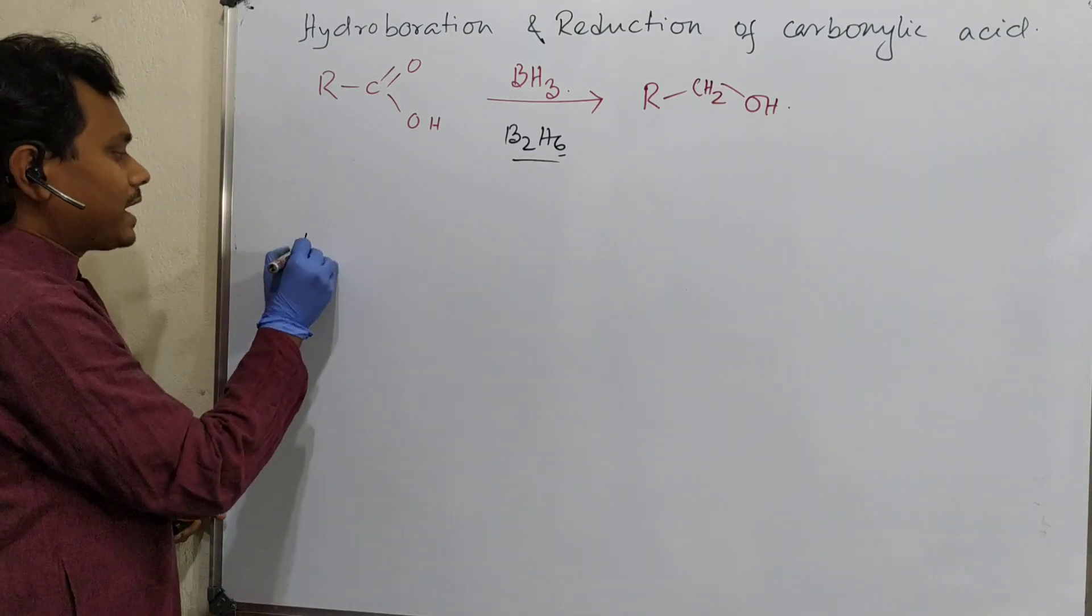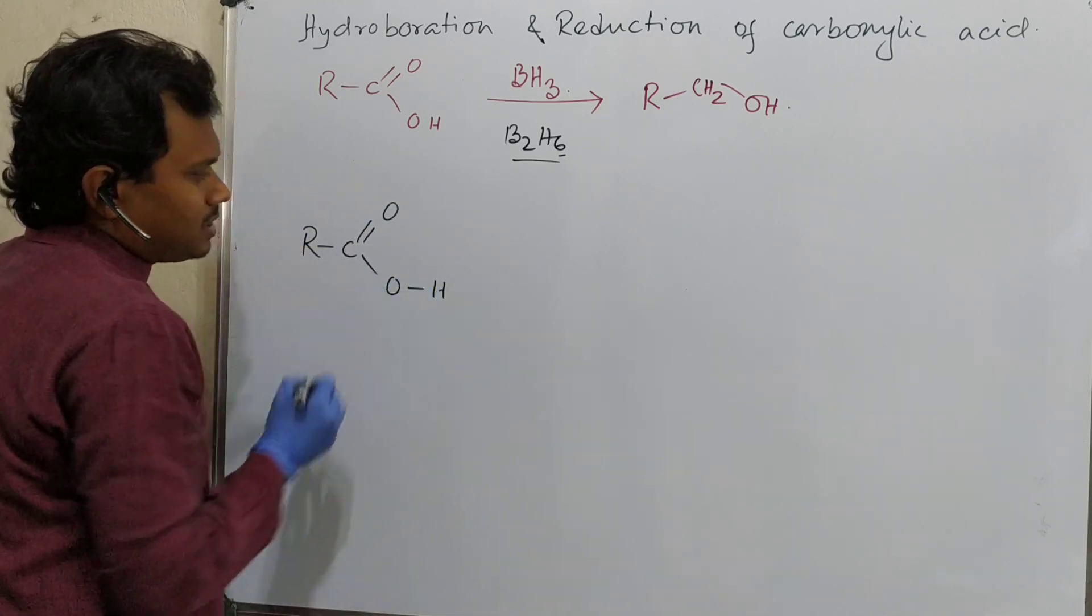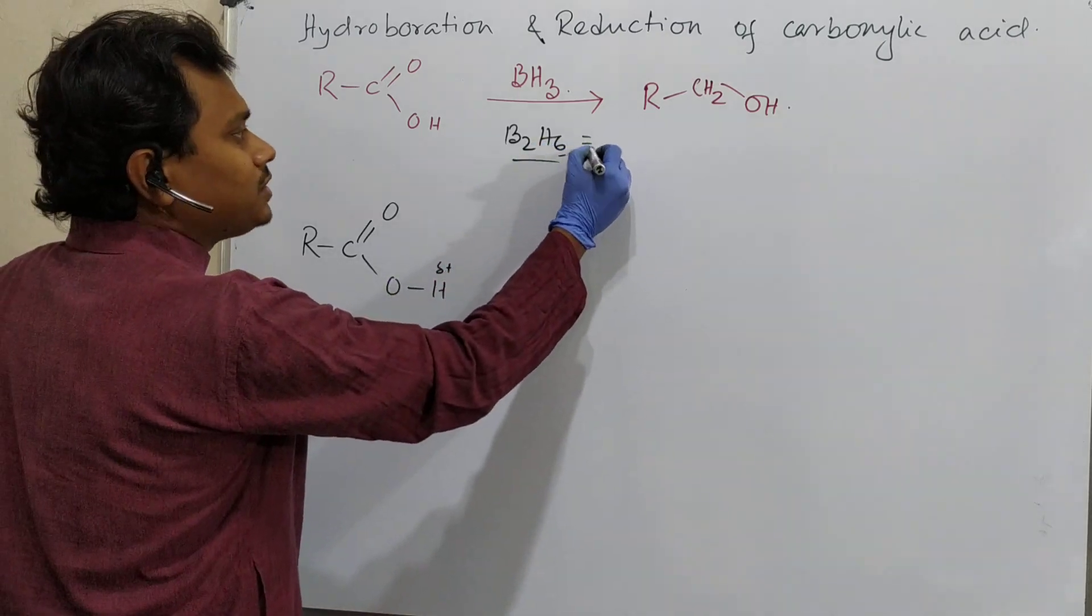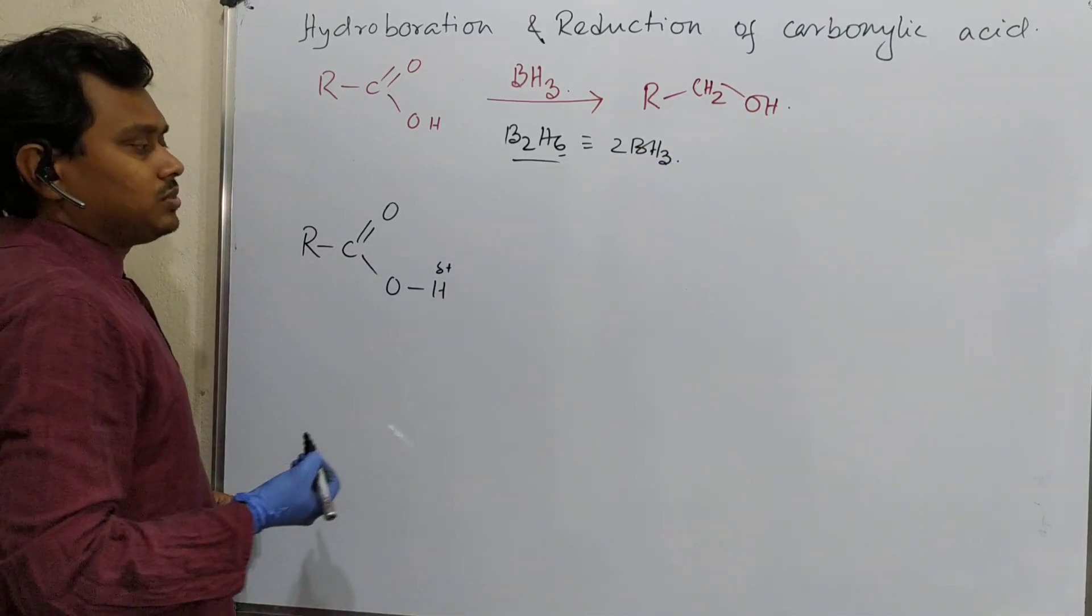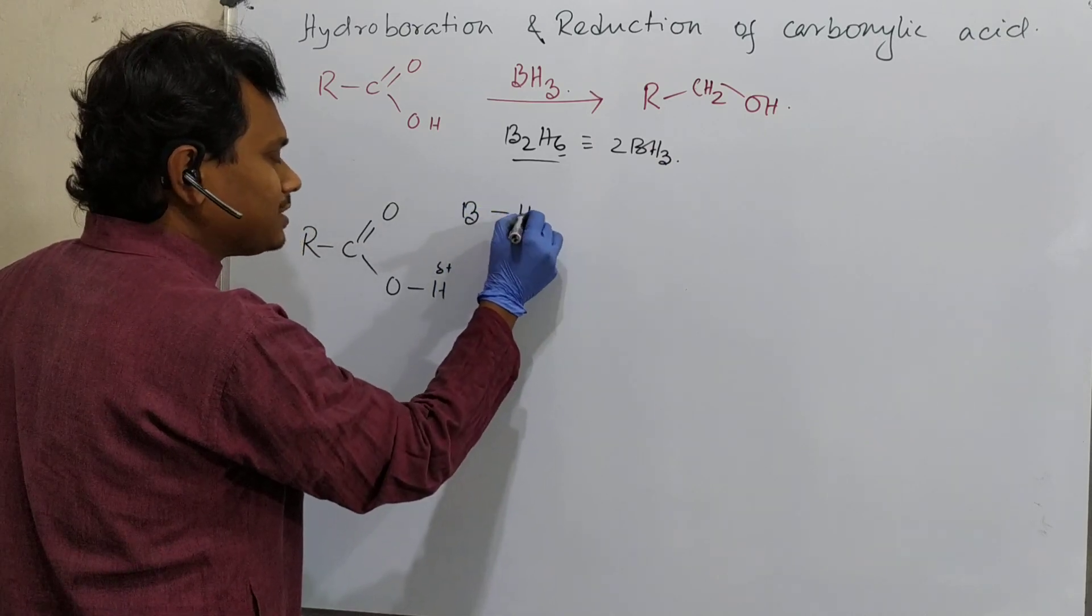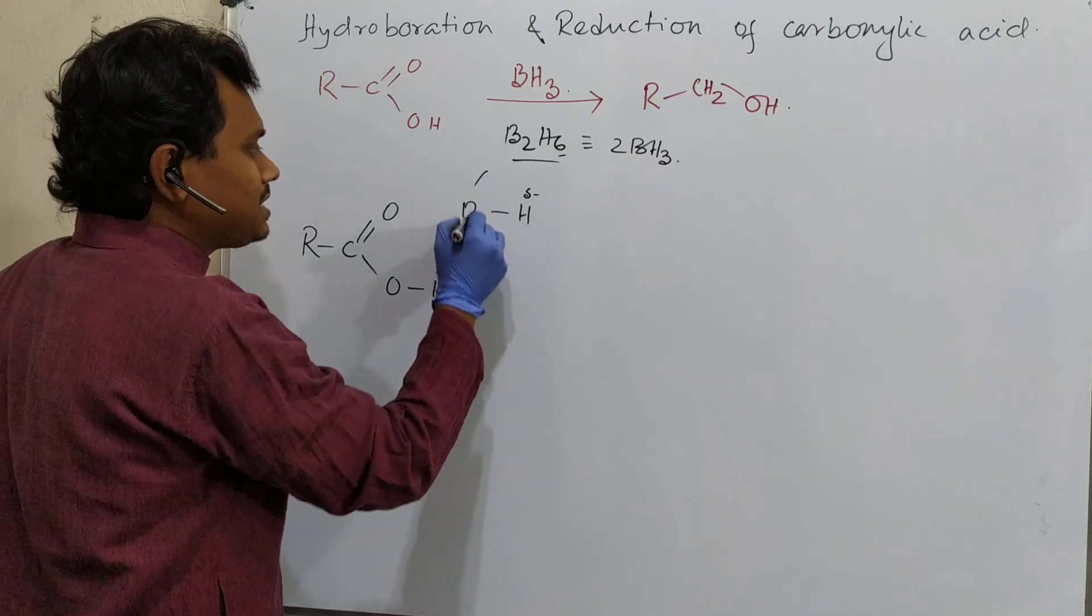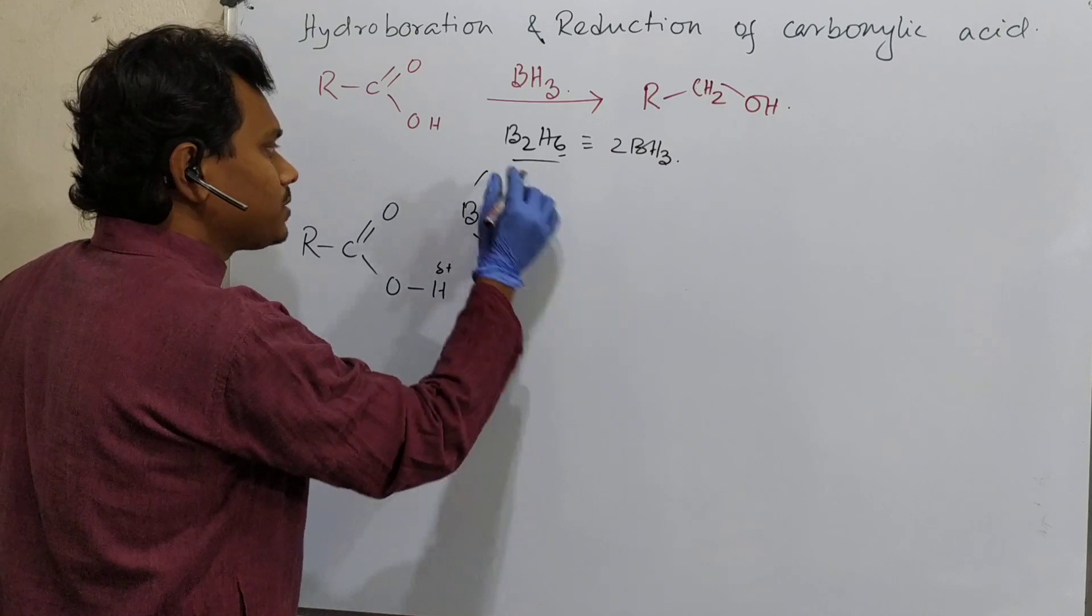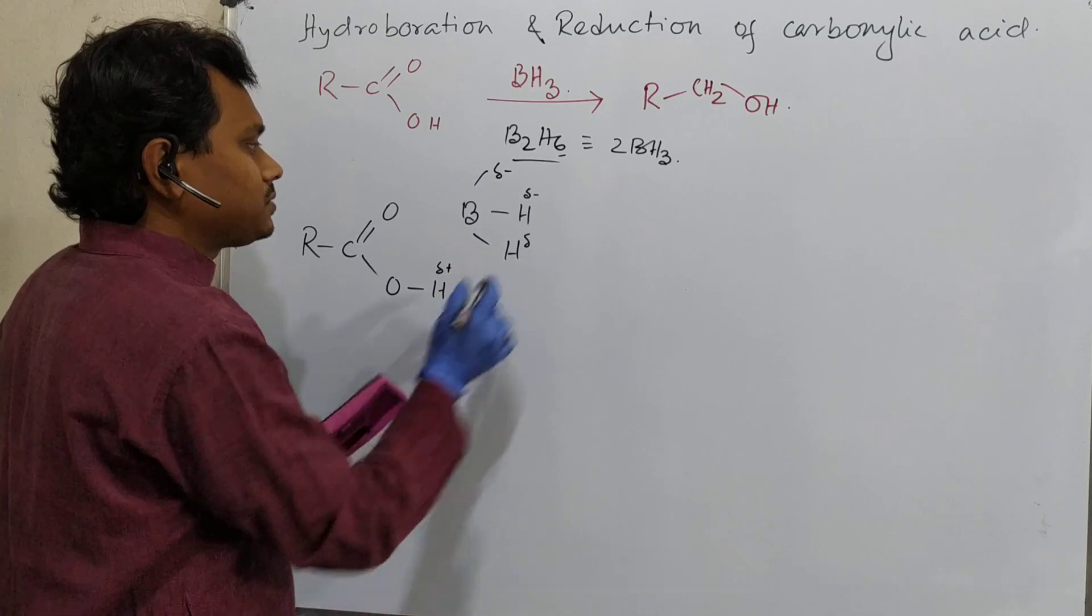If we look at carboxylic acid, this contains a delta positive proton and B2H6 which is equivalent to 2BH3, it is a dimer. In presence of donor atom, this reacts. If we check this BH3, this hydrogen is delta negative. So actually what is happening? This is actually hydrogen production reaction. The first step of the process is hydrogen production.